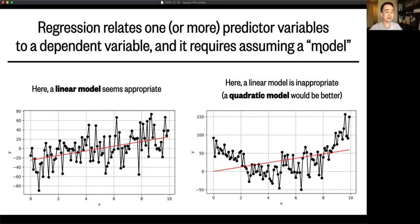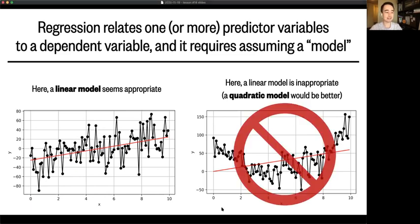Other times, a linear model is not appropriate. So for example, in this data here, you'd be better served by using a quadratic model. Now, in fact, using a linear model in this second case here won't give you any meaningful results, and it would be sort of considered misuse of your data. So you have to be careful here. Choosing to calculate a linear regression is not a way to just passively explore your data. It's an active choice that says, based on what you know about your data ahead of time, you expect the data to have a linear quality to it.